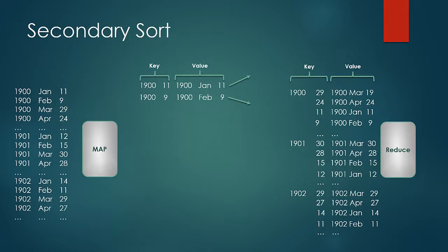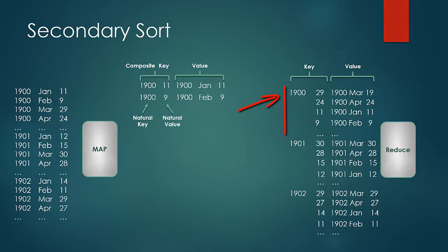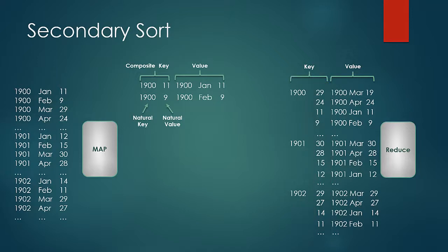So in this case we learn a new concept of composite keys. A composite key is composed of two portions: natural key and natural value. The natural key is the portion of the composite key which should be considered for partitioning and grouping, whereas the natural value is the portion of the composite key which can be considered while sorting. The first step of the solution is to make a custom writable class to handle the composite key, which would always be made up of two or more Hadoop data types — in this case, a pair of IntWritables.